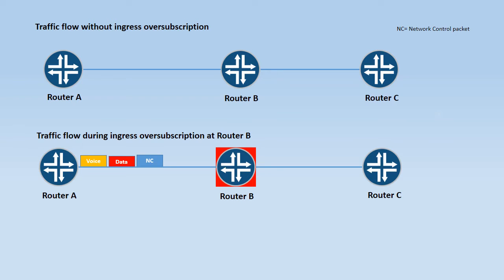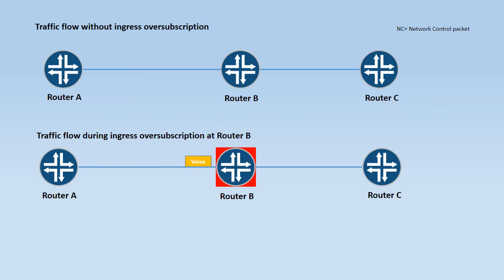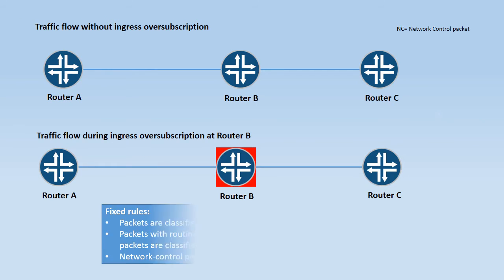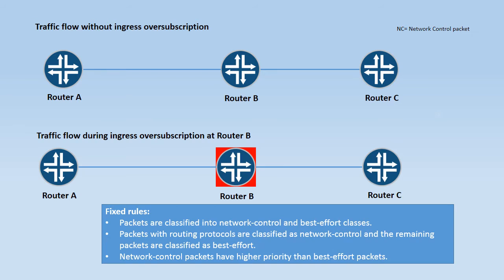When ingress over subscription occurs at router B, some packets are dropped by router B. This happens because the packet forwarding engine of router B is programmed with fixed rules to handle ingress over subscription.